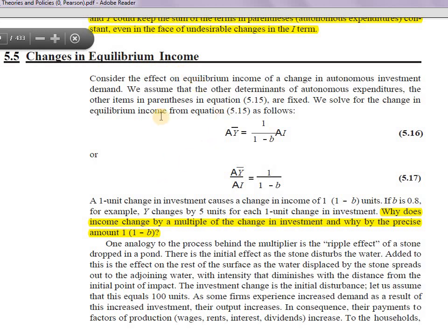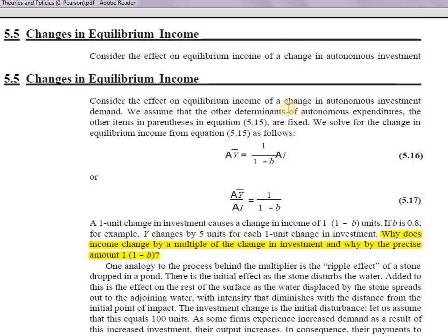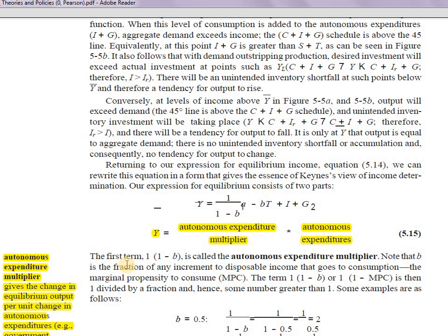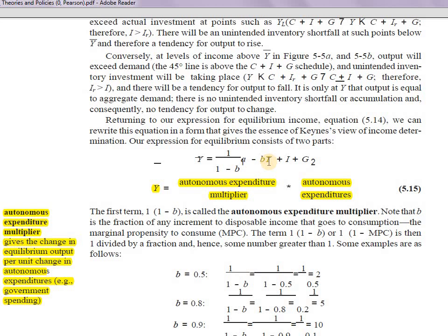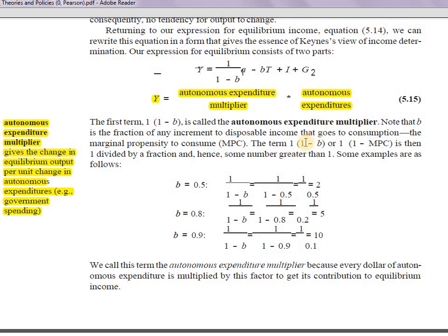As the topic suggests, we're going to study changes in the equilibrium income — how there can be a change in the equilibrium income as per the Keynesian system. This change in the level of income can happen by a change in any autonomous expenditure. Investment demand is autonomous; government spending and taxes are also autonomous components. Consumption is an induced component, not an autonomous one.